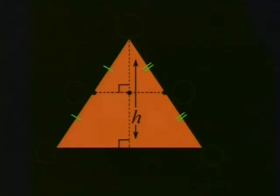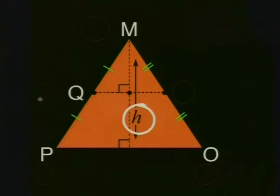Let's use a diagram to show you what we did. Let's call this triangle MPO with height h. We found the midpoint of the two sides of the triangle by folding. Label them Q, N, and join the line.